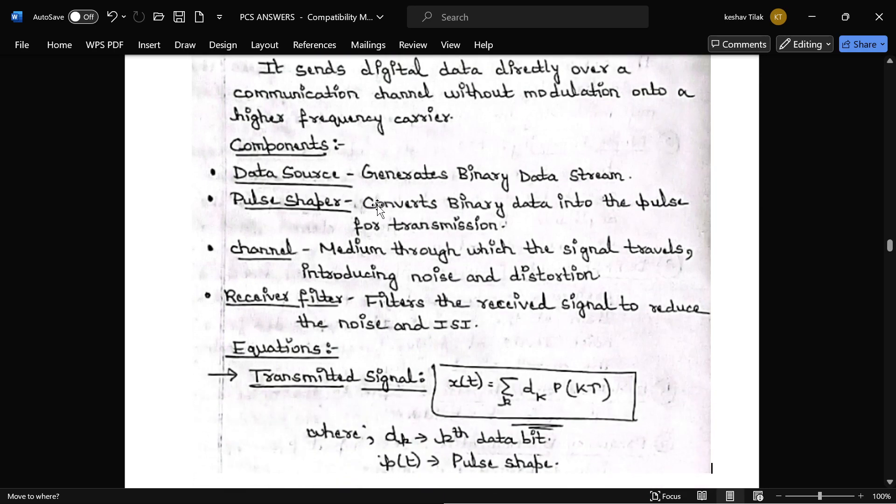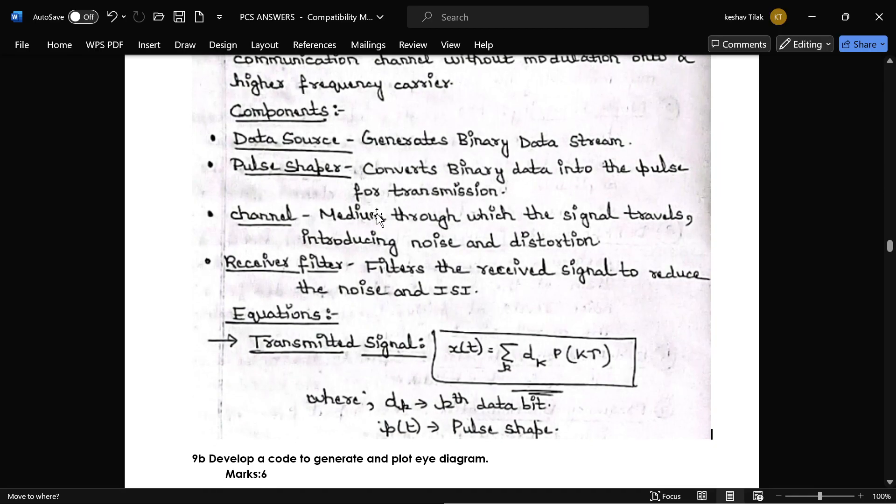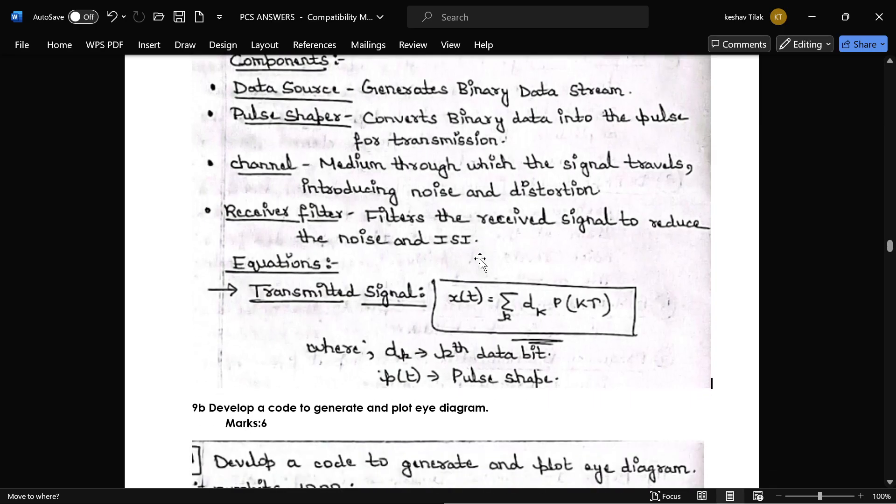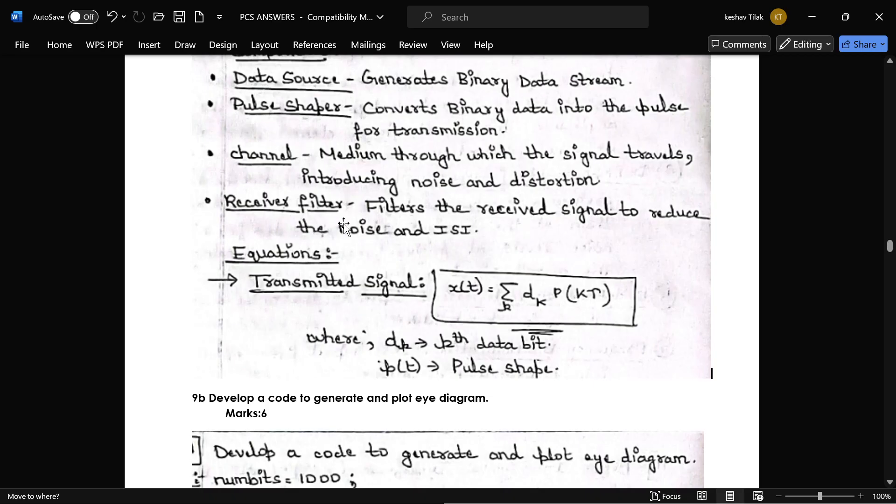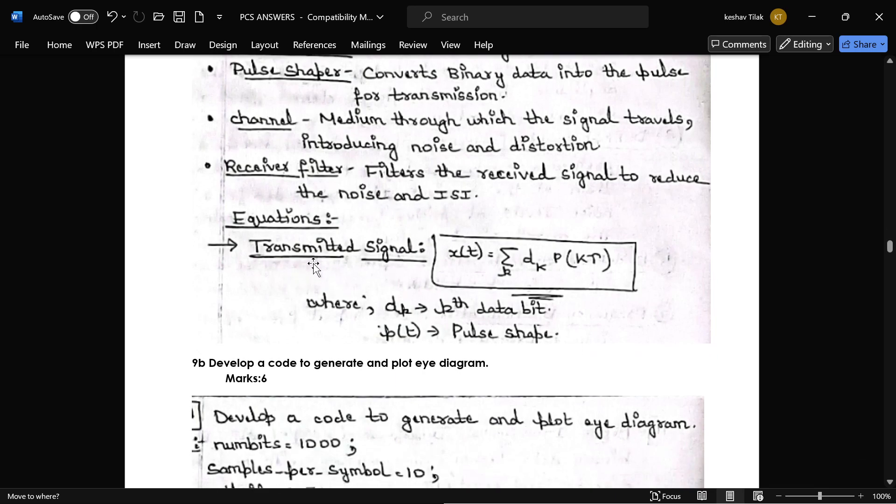That is Data Source. It will generate the binary data stream. And Pulse Shaper. This will convert binary data into pulse for transmission. And channel. This is the medium where all channels, all signals are traveled and introducing noise and distortion. Next is Receiver Filter. This filter will receive the signal and reduce the noise and ISI. And this is the equation for transmitted signal.